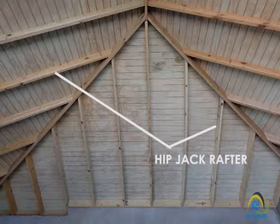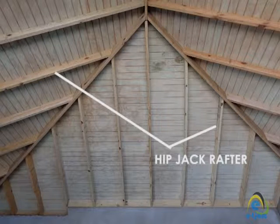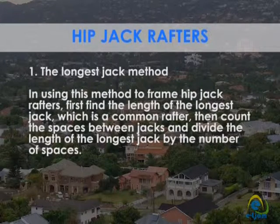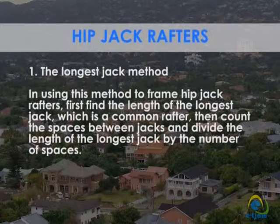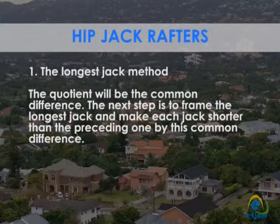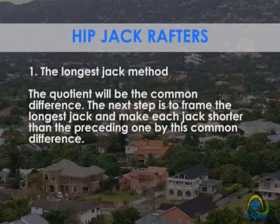Determining the length of jack rafters: the hip jack rafters are the final set of rafters that we will lay out, cut and install. Three methods can be used in framing these rafters. Method 1 — the longest jack method: first, find the length of the longest jack, which is a common rafter. Then count the spaces between jacks and divide the length of the longest jack by the number of spaces; the quotient will be the common difference. The next step is to frame the longest jack and make each jack shorter than the preceding one by this common difference.